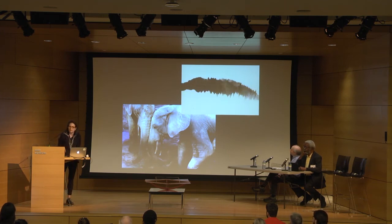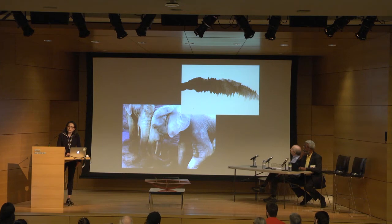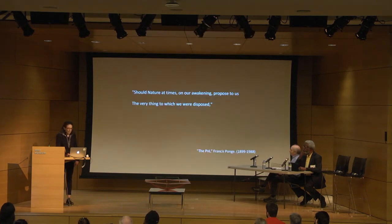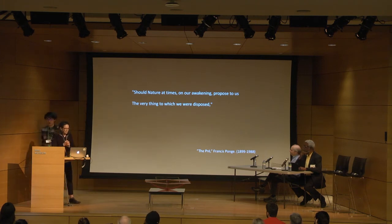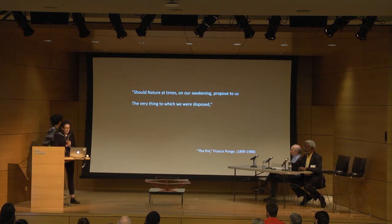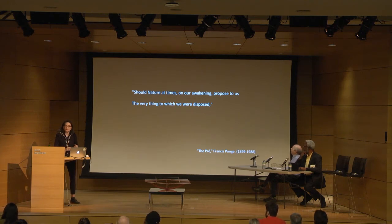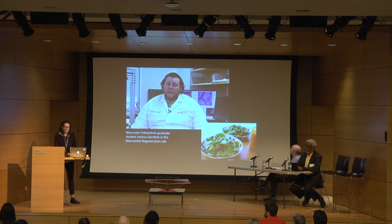The reason why she could detect this is because she was a Quaker and growing up, she often felt the vibration in the air — the shuddering of the air — at the lower registers of the organ. So she was prepared to make this discovery. It needed someone like Katie to speed up the tape. What she found is that elephants have a highly developed language — not just semantics, but syntax. As the poet wrote: 'Should nature at times on our waking propose to us the very thing to which we were disposed' — what we were disposed to discover.